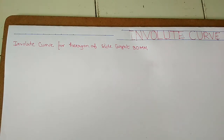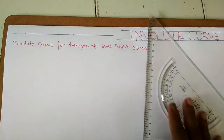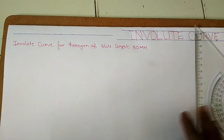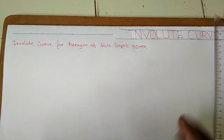Good morning friends. Today I will draw the involuted curve for a hexagon of side length 30 mm. First of all, we will draw a hexagon of side length 30 mm.